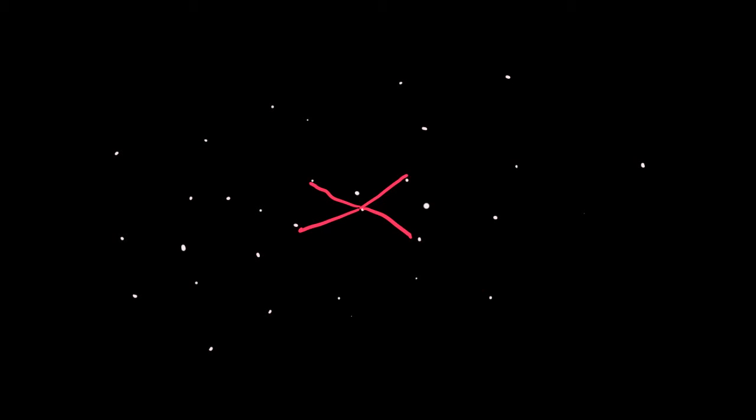So, the Greek word planetes actually means wander star. It means a moving star. That is a planet.